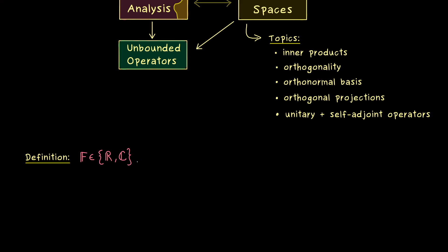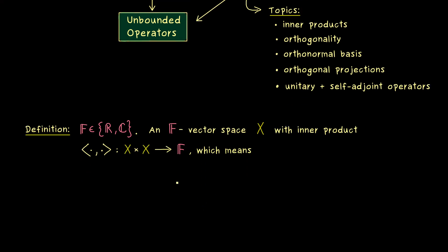You can remember the field of scalars is always fixed with the letter F. Therefore our vector space is always an F-vector space and we denote it by X. Throughout this video course here, X always carries an inner product denoted by these pointy brackets. So it's a map with two inputs both coming from X, and the output is just a scalar.